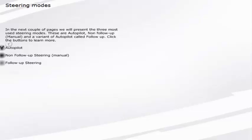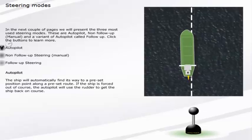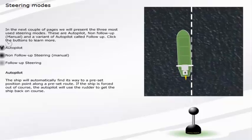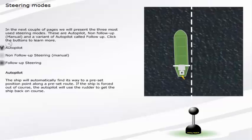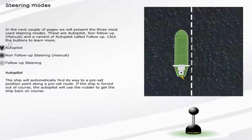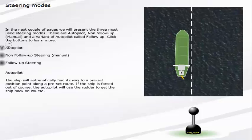Autopilot. The ship will automatically find its way to a preset position point along a preset route. If the ship is forced out of course, the autopilot will use the rudder to get the ship back on course.